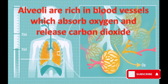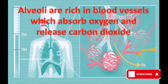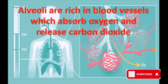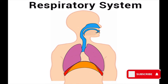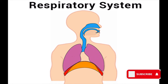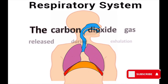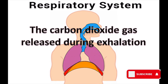In this way, deoxygenated blood present in the blood vessels changes into oxygenated blood — impure blood changes into pure blood. In this way, the respiratory system supplies oxygen to the cells, and carbon dioxide gas is released during exhalation.